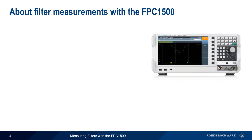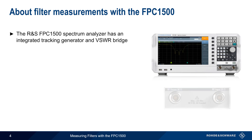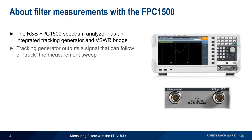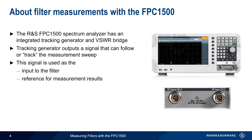The Rohde & Schwarz FPC-1500 Spectrum Analyzer contains both an integrated tracking generator and an internal VISWAR bridge. The tracking generator is an RF signal source whose frequency can follow or track the measurement sweep. This signal is used both as the input to the filter, as well as the reference for the measurement results. The integrated VISWAR bridge enables the FPC to make reflection measurements on filters as well.